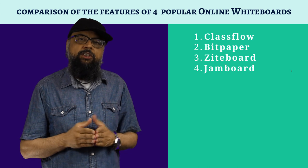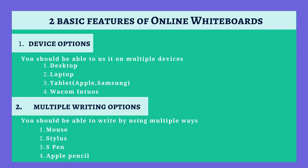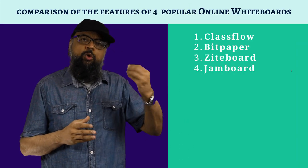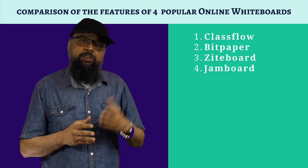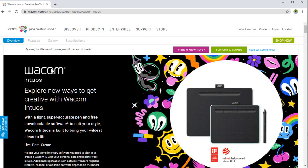Let's have a look at some of the basic features which we should have in these whiteboards. The first critical feature is that you must be able to use the whiteboard application on different devices other than their own physical device. For example, you must be able to use it on your desktop, laptop, or tablet. I also recommend checking that you can use it on Wacom Intuos tablets, because this is the cheapest option — cheaper than an Apple iPad or a Samsung tablet, but it does the job very well.